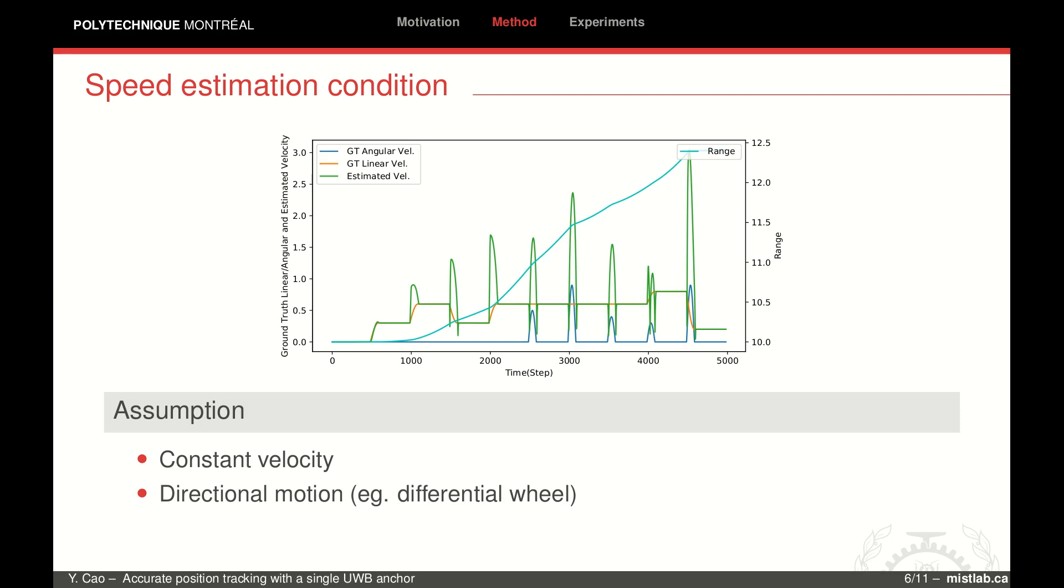Speed estimation produces erroneous peaks during speed changes. This is in line with our expectations since we assume constant velocity. Considering that constant velocity motion is still the predominant motion in most real-world scenarios, this assumption is still valid in many situations.